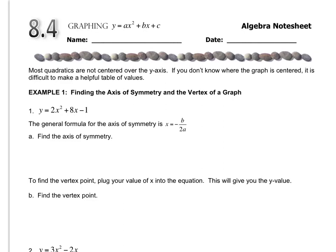So you look down here, and it tells you that the general formula for the axis of symmetry is x equals negative b over 2a. And the a comes from the coefficient of the x squared, and the b comes from the coefficient of the x.